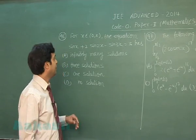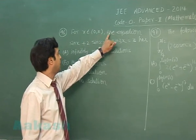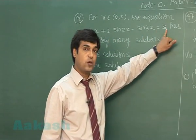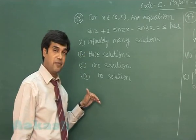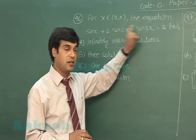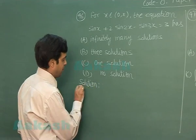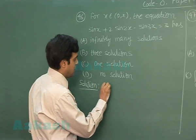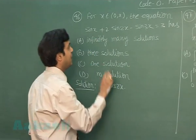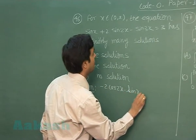Let's talk about question 46: for x from 0 to π, the equation sin x + 2sin2x − sin3x = 3. Options are given about the number of solutions. Let's simplify using the identity sin C − sin D = 2cos((C+D)/2)·sin((C−D)/2). This gives 2cos(2x)·sin(−x) + 2sin2x = 3.